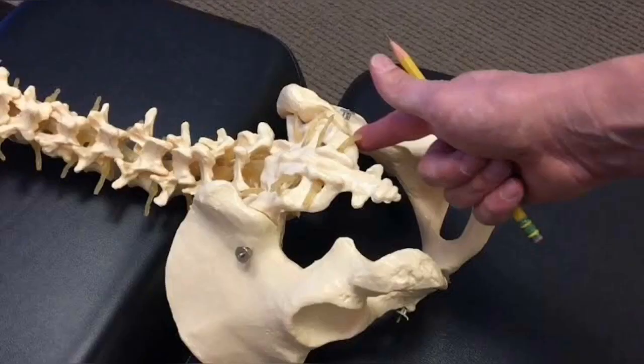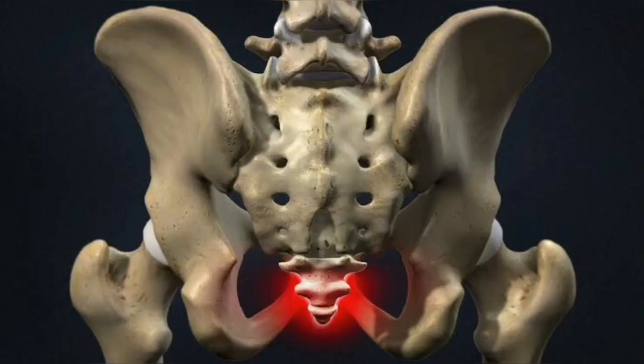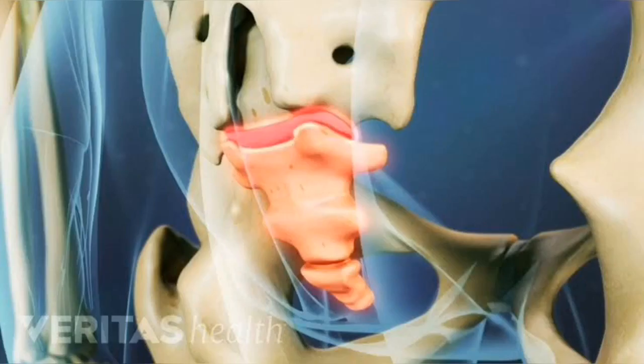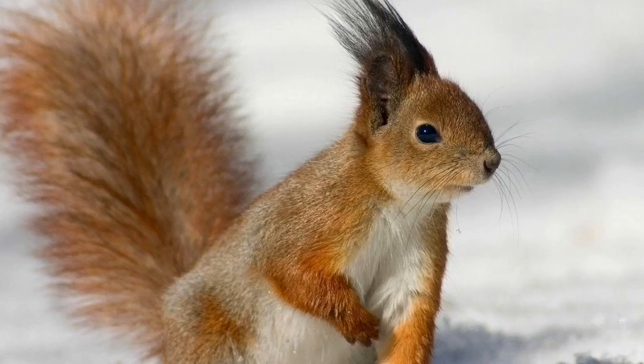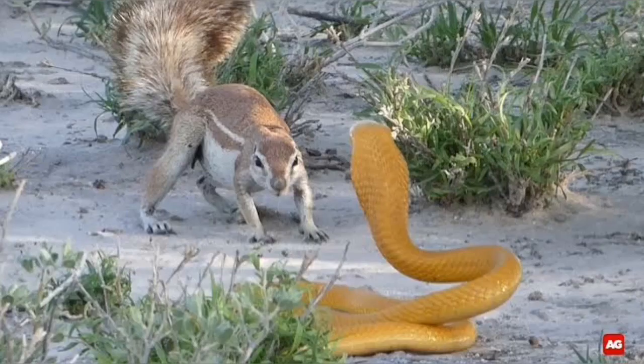We are looking at the tailbone, located in the spine. This is also a vestigial organ. It was once used by our ancestors — since this is a structure that predators used to help with movement or balance.